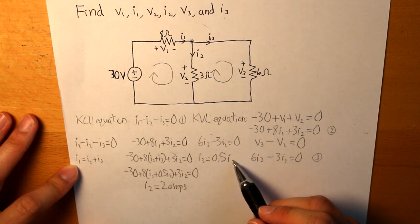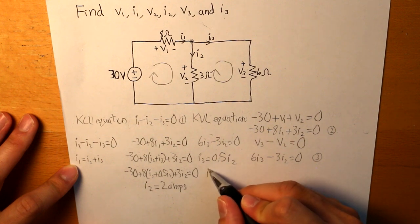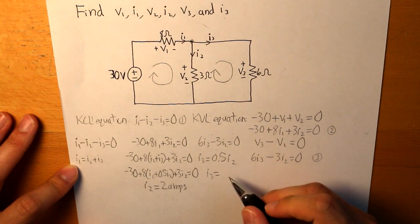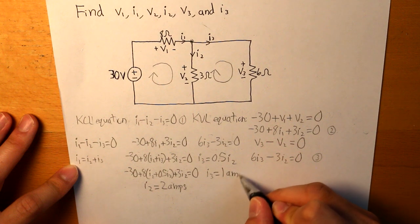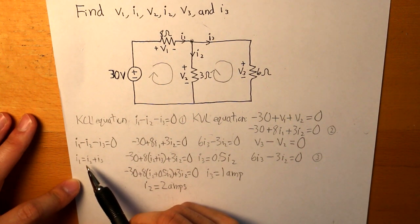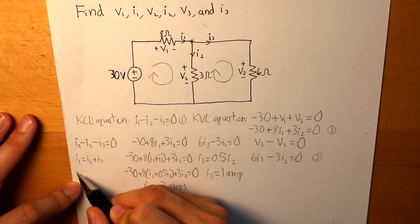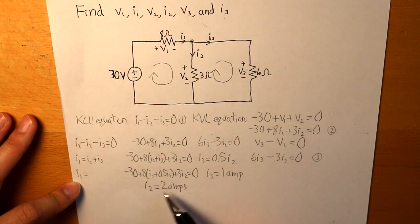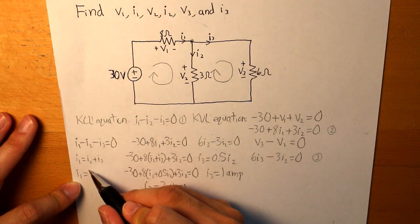And then we can sub I2 into equation 3 right here to find what I3 is. And I3 is going to be 1A. And if we sub both of these values into equation 1, we can find what I1 is. And I1 is equal to 2 plus 1 or 3A.